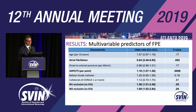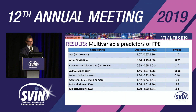In multivariate analysis, predictors of first-pass effect included both patient-specific factors — atrial fibrillation, baseline ASPECTS, and site of occlusion. Non-ICA occlusion was associated with first-pass effect.